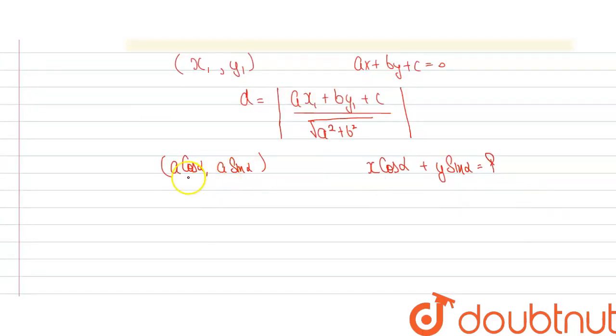So now this means let this be the point X1, Y1. This is in the form of Ax plus By equal to minus C. So value of A will be cos alpha by comparing it. Value of B will be sin alpha.